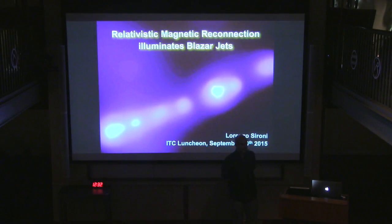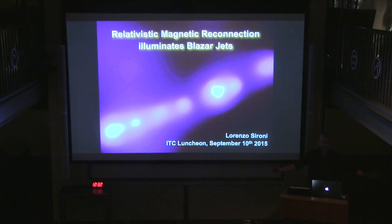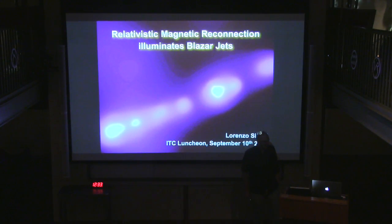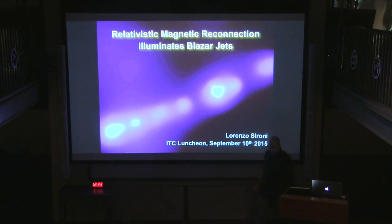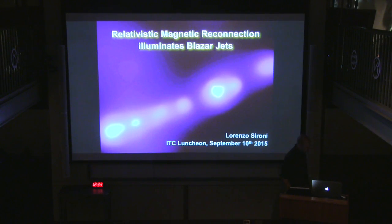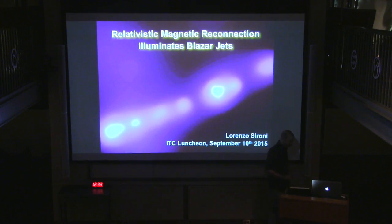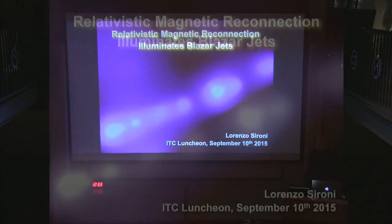As they say in TV series, welcome to our new and exciting season of the ITC luncheon. I will try to argue in this talk that relativistic magnetic reconnection can actually illuminate blazar jets. 'Illuminate' is meant to be ambiguous — it provides the light and also helps understand what is the dissipation mechanism responsible for the light that we see.